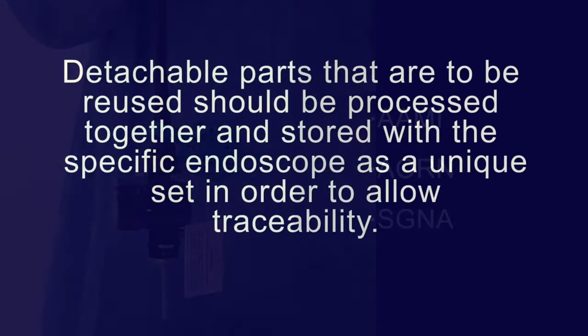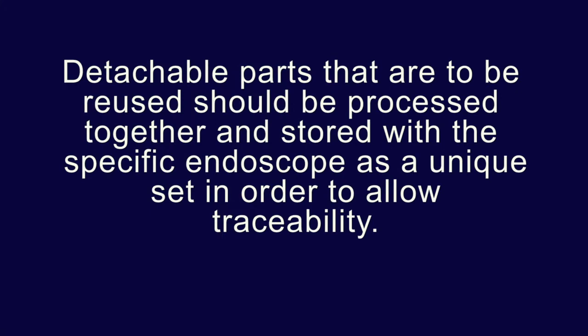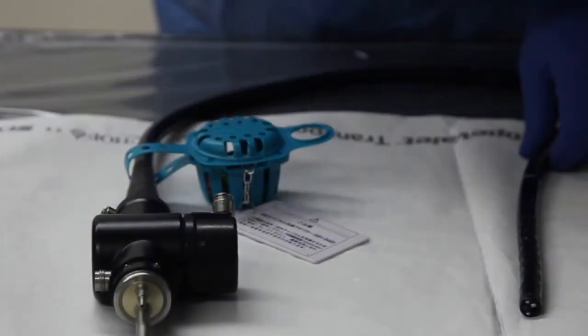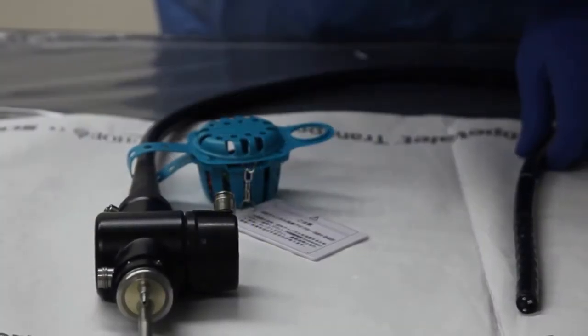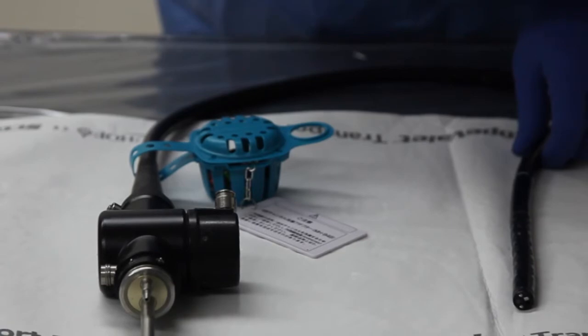These guidelines state: Detachable parts that are to be reused, for example, air, water and suction valves and pistons, should be processed together and stored with the specific endoscope as a unique set in order to allow traceability. To keep the parts together with the scope, a small bag or similar device can be used to attach the parts to the scope.